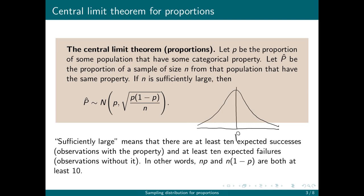What do we mean by sufficiently large? Sufficiently large means there are at least 10 expected successes and 10 expected failures. By successes I mean observations that have the property, and by failures I mean observations that don't. The number of expected successes is n times P, and the number of expected failures is n times (1 minus P). Both of those numbers have to be at least 10 for the central limit theorem for proportions to work.